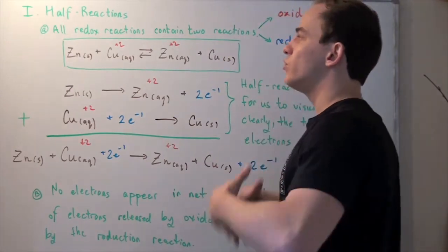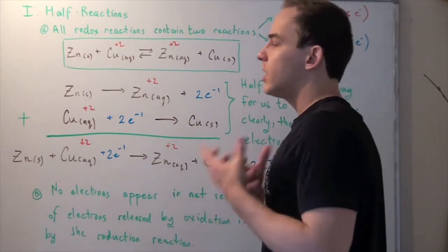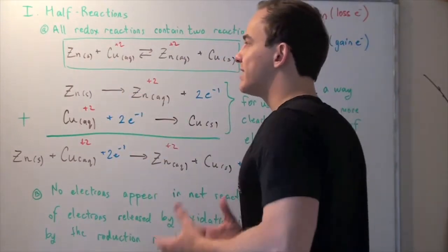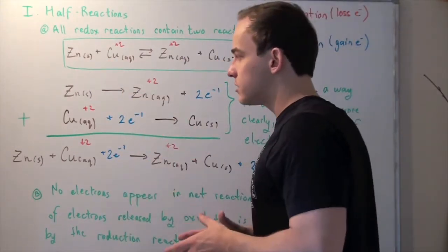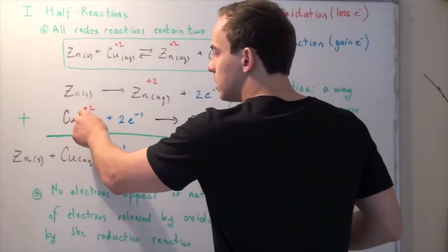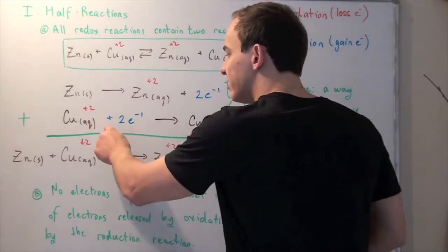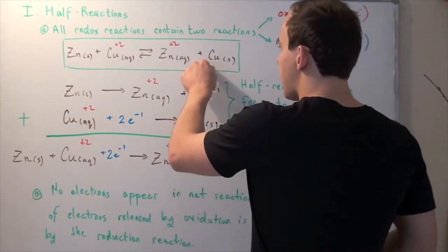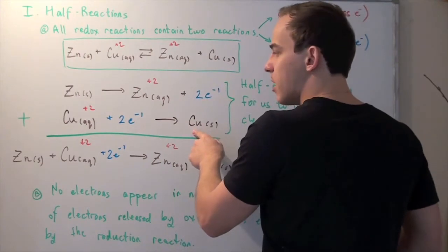Now let's write the reduction reaction. In our reduction reaction, our copper gets reduced because it gains those two electrons that are lost by the zinc. So our Cu²⁺ gains two electrons, plus 2e⁻, producing a neutral copper solid molecule.